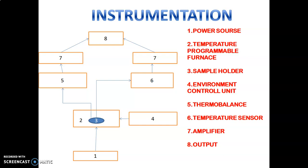This is the block diagram of thermogravimetric analysis. The components are: first, power source; second, temperature programmable furnace; third, sample holder; fourth, environment controller unit; fifth, thermobalance; sixth, temperature sensor; and seventh, amplifier and output. If you study the function of each component, it is easy to memorize the instrumentation.